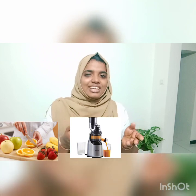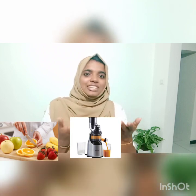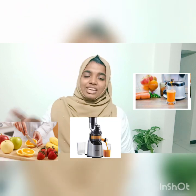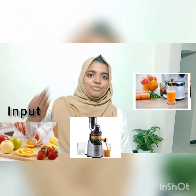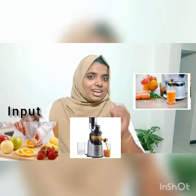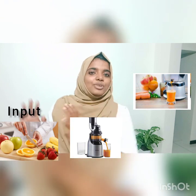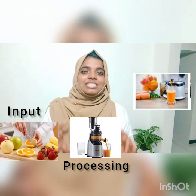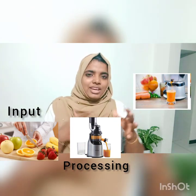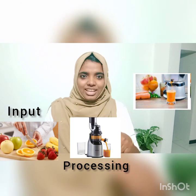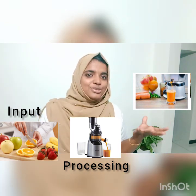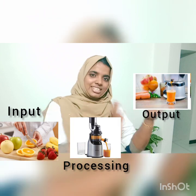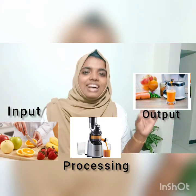We put it in the mixer — the juice machine. The mixer is the processing device. So fruits, water, milk, and sugar are the input. The mixer does the processing. And the juice that comes out is the output device. Input goes to processor, and out comes the juice — that's the output.